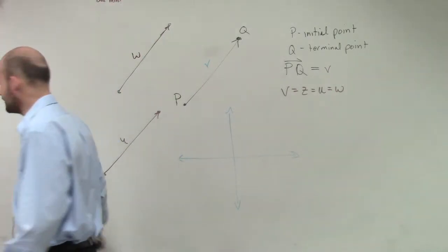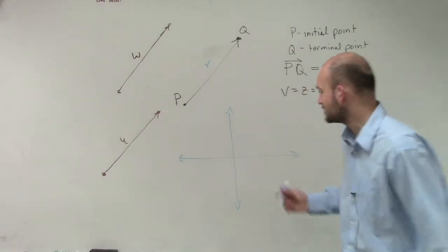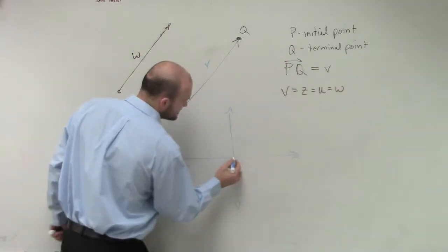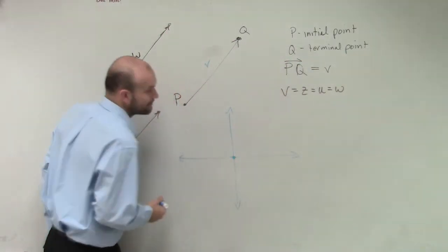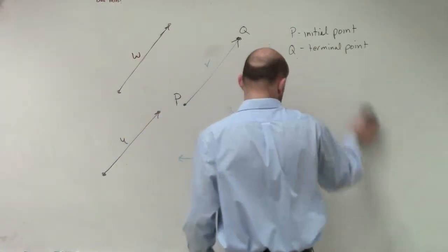So what we came up with is looking at the component form of a vector. And what the component form of a vector is going to tell us is we want to have our initial point is at 0, 0.